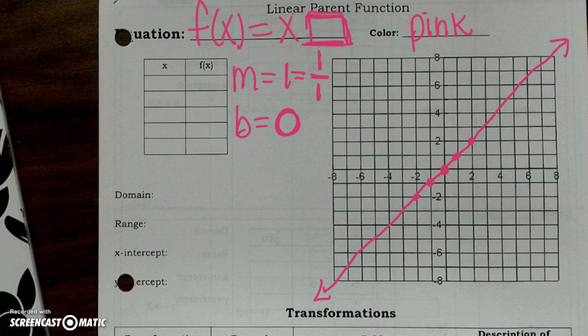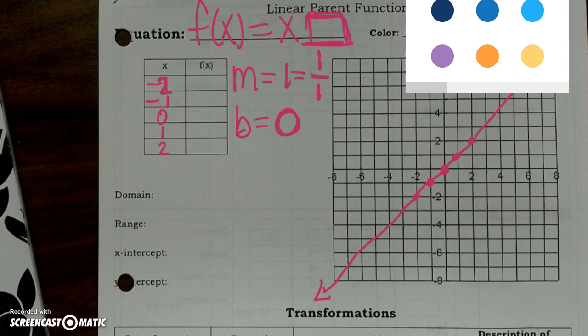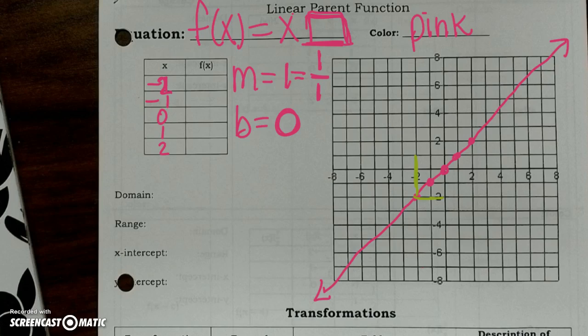And there it is. Now we're going to fill in the table. I want you to write your x's: negative 2, negative 1, 0, 1, and 2. When my x is at negative 2, it crosses with my y at negative 2 as well. When x is negative 1, y is negative 1. When x is 0, y is 0. When x is 1, y is 1. And when x is 2, y is 2.